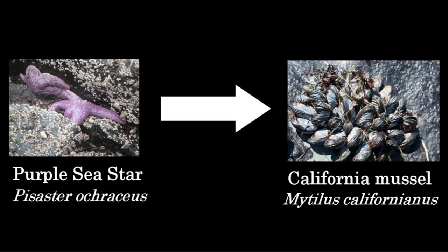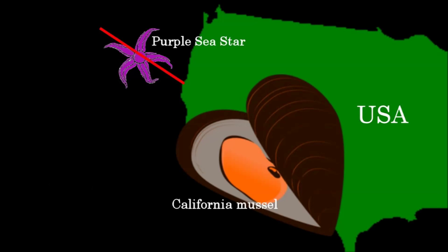Sea stars are one of the main predators for the mussel Mytilus californicus. With the sea star gone, the mussel completely dominated the community, pushing out many other species. From this, he was able to show that some species have very important roles to play in biological communities.